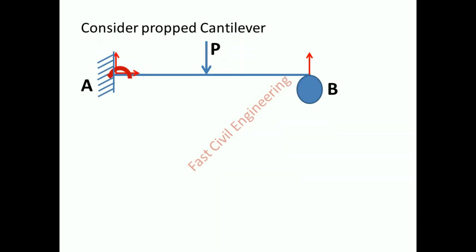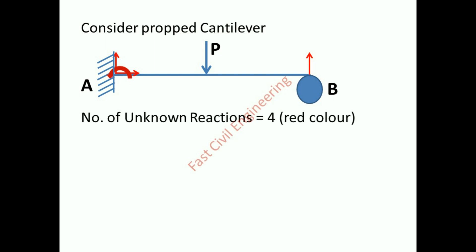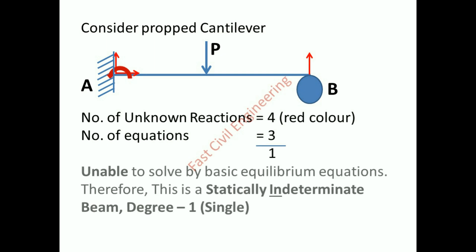Consider this prop cantilever. Number of unknown reactions equals four, indicated in red color. Number of equations equals three — one additional unknown. Unable to solve by basic equilibrium equations; therefore, this is a statically indeterminate beam, degree one.